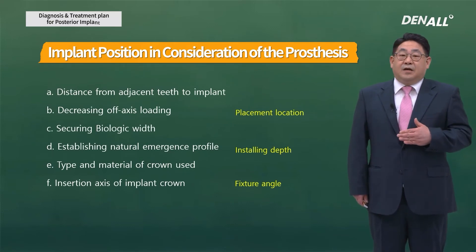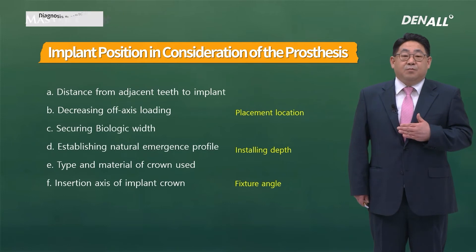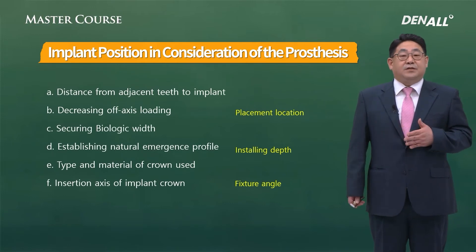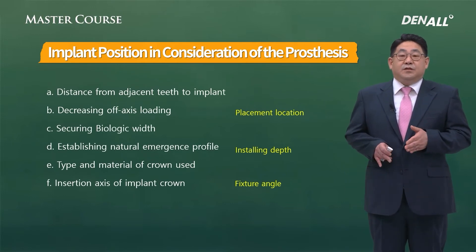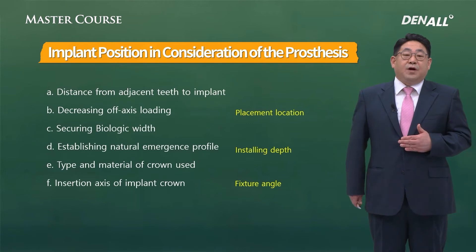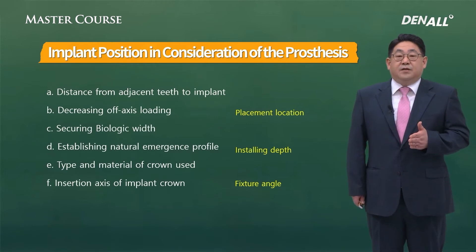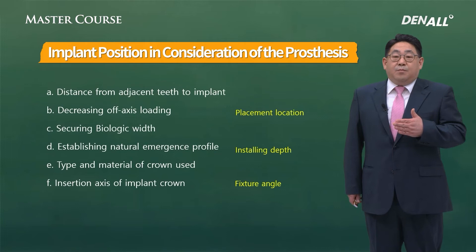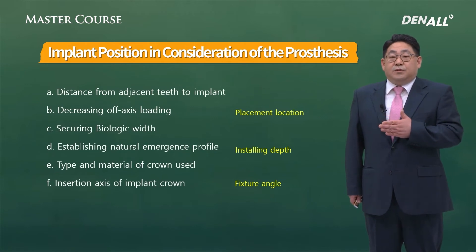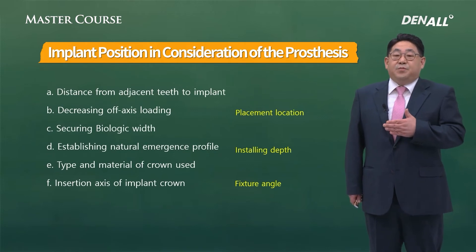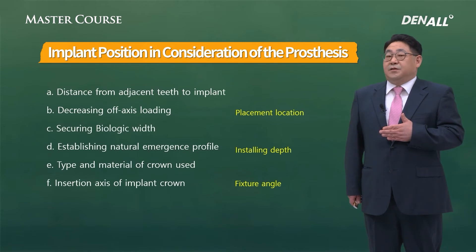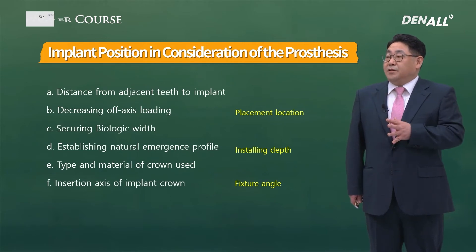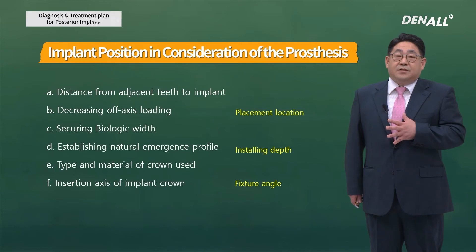To summarize what I've discussed thus far, along with placing the implant in an ideal position, we need to consider the antagonist relation and the materials to be used. This is essential for maintaining function and longevity of posterior implants. Please remember these six factors.